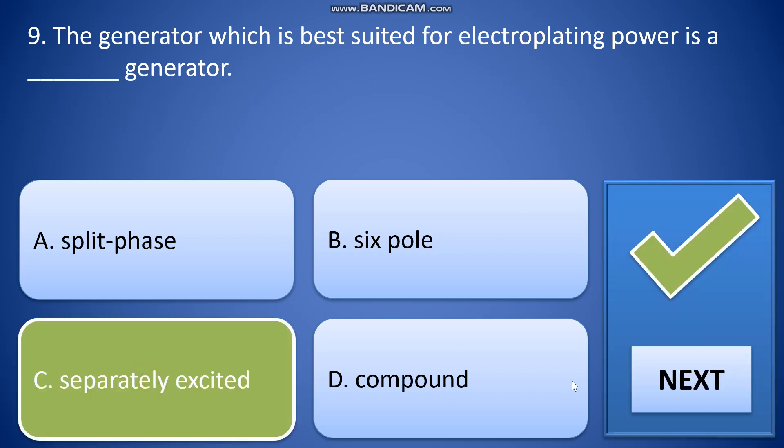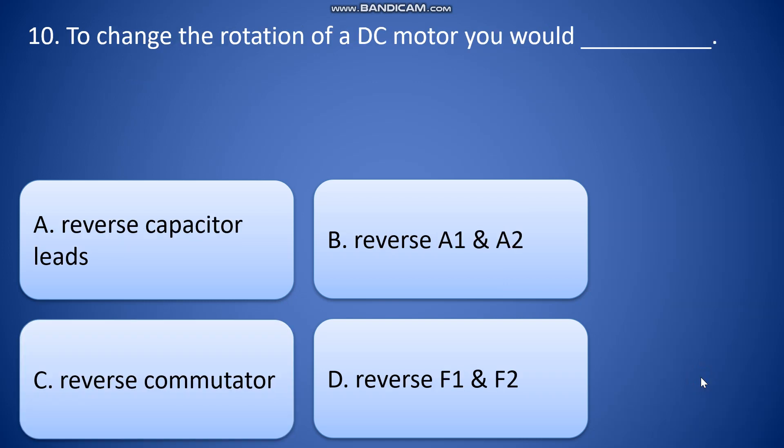To change the rotation of a DC motor you would: A: reverse capacitor leads, B: reverse A1 and A2, C: reverse commutator, and D: reverse F1 and F2. So the answer will be reverse F1 and then F2.